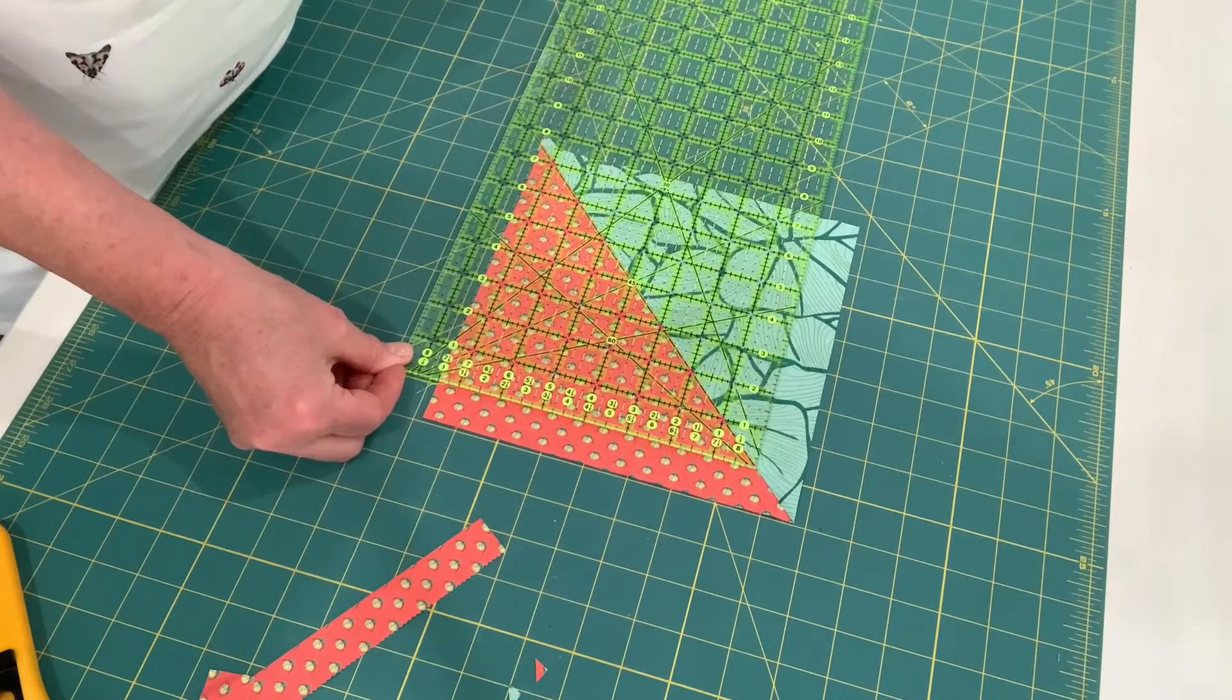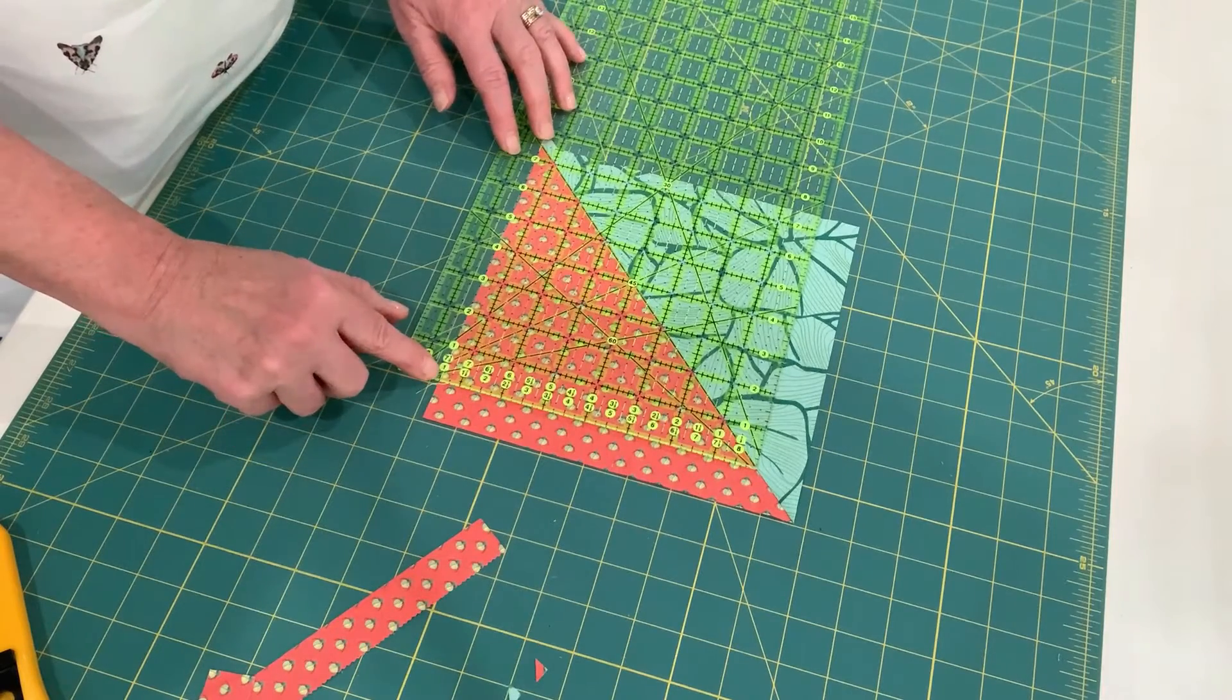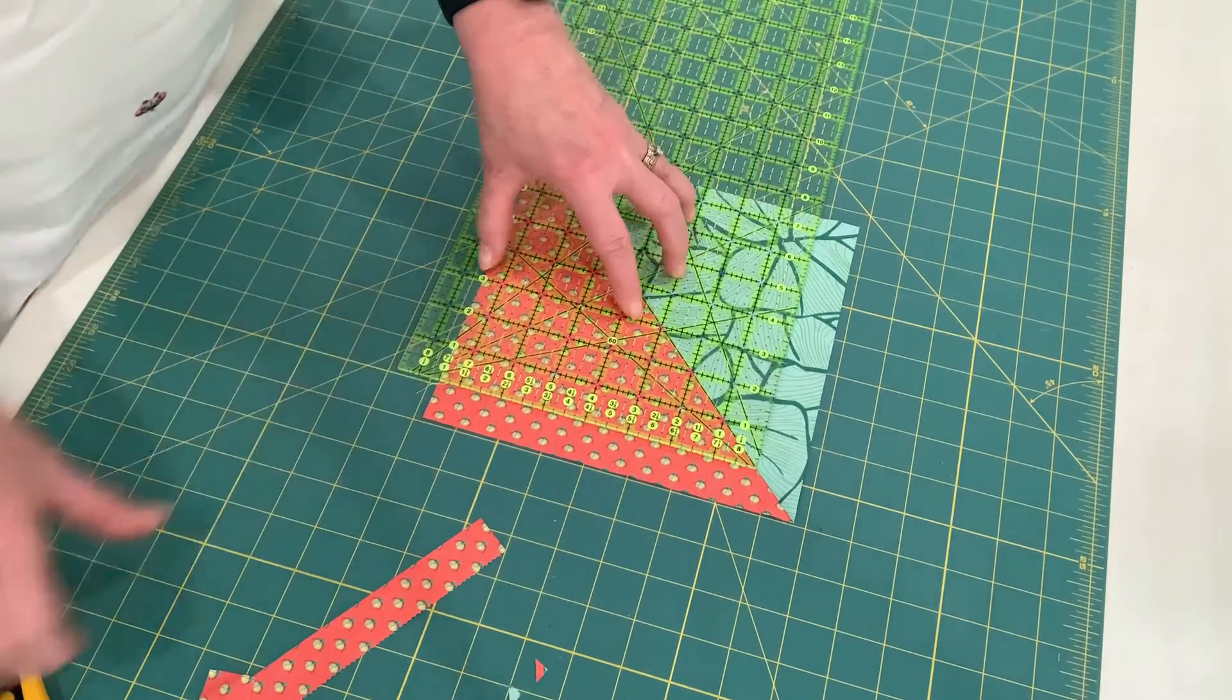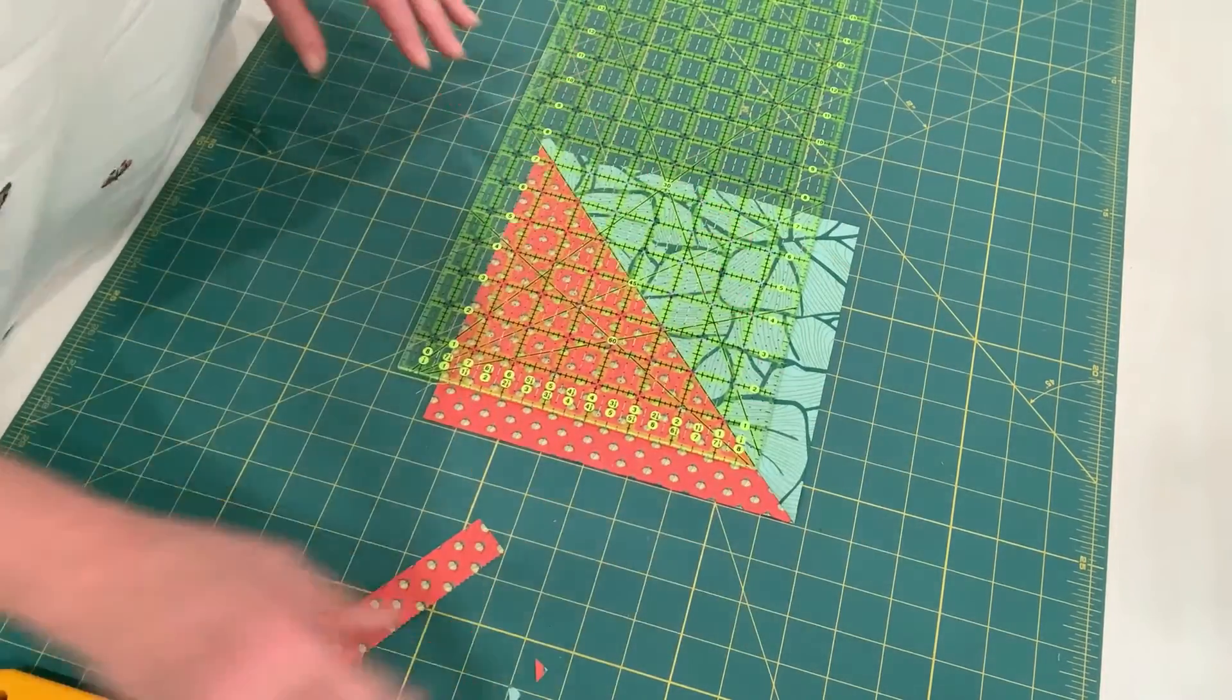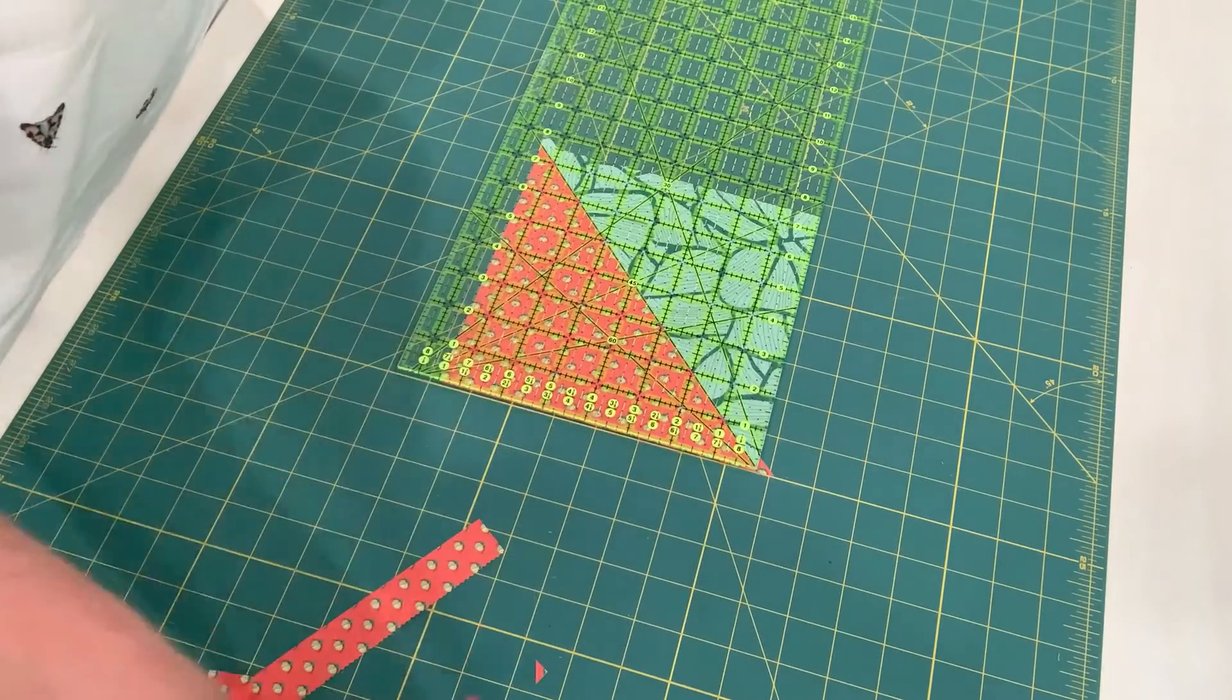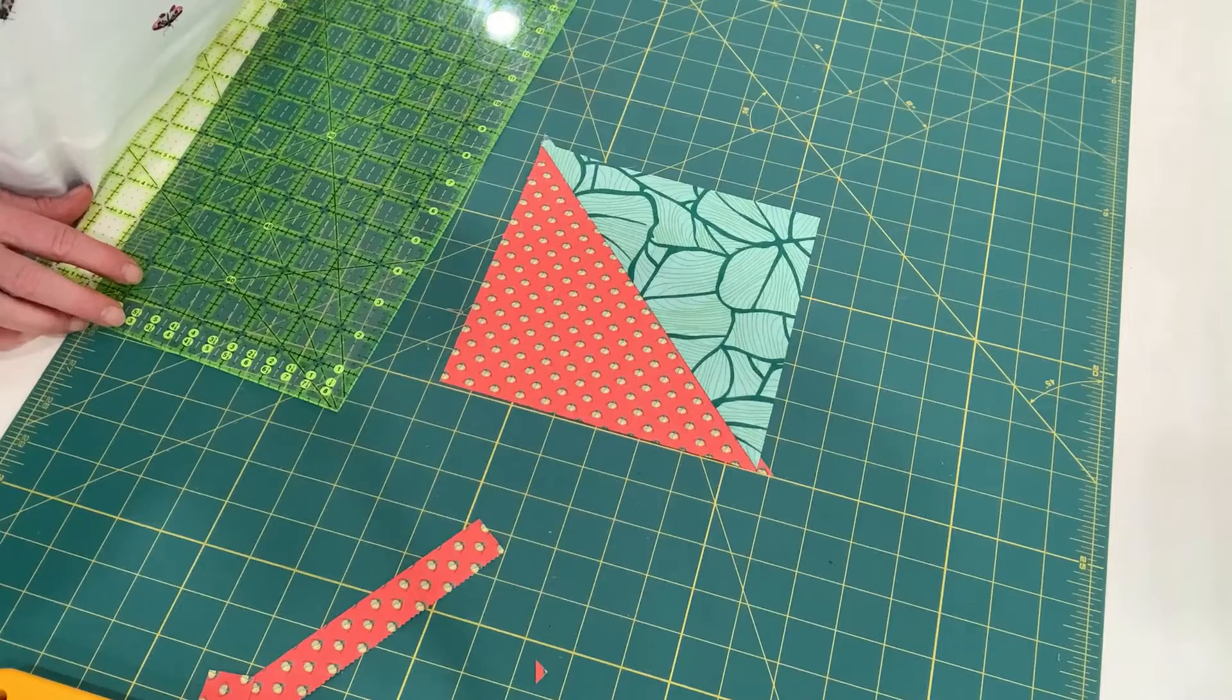Like that, so it's 7 1⁄2 inches here, 7 1⁄2 inches here, trim, trim, and then I've got a 7 1⁄2 inch perfect half square triangle square.